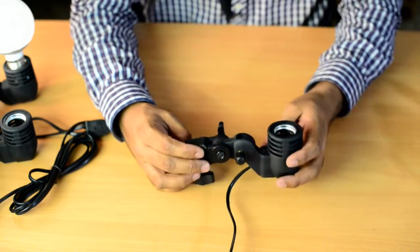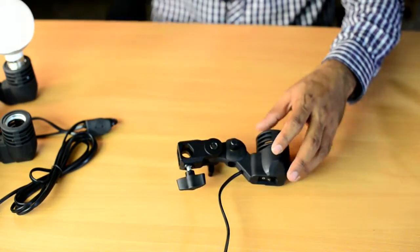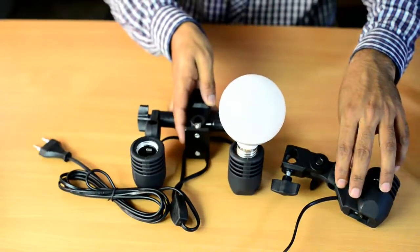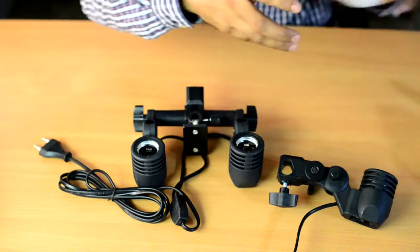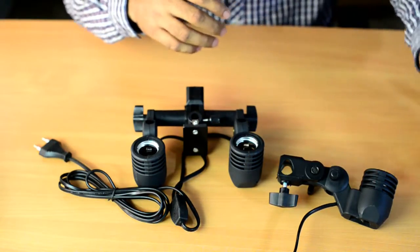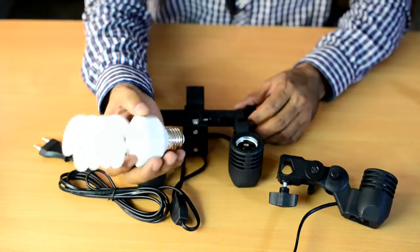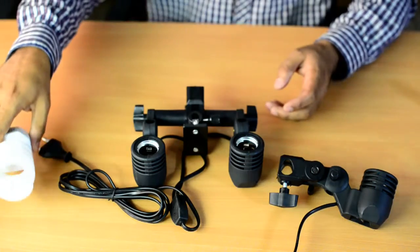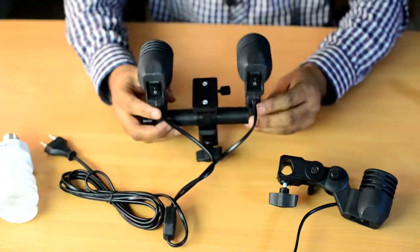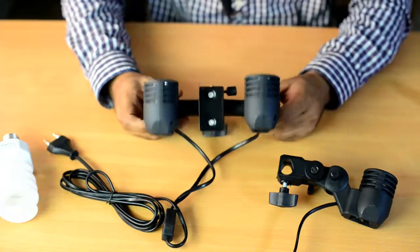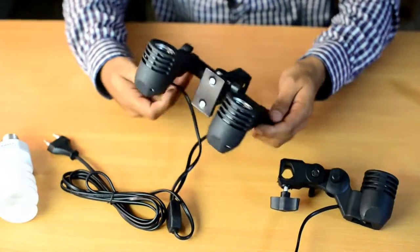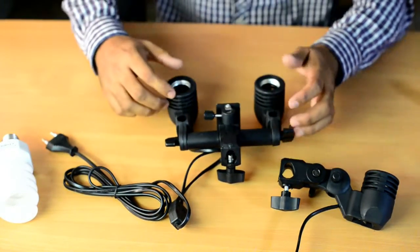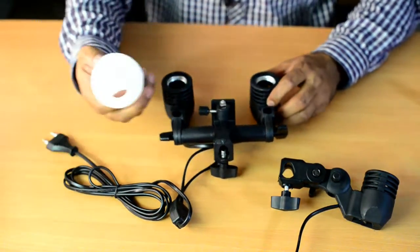We also have one more bracket which takes two CFLs. This is the third CFL with us. You can mount two CFLs, two LED bulbs, or two bulbs with the converter, whatever combination you want. This also takes the umbrella and mounts on a light stand.